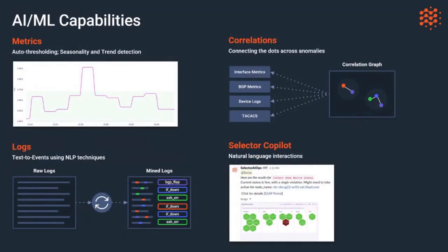To recap on AI and ML in the platform today: we have auto baselining and auto thresholding for metrics. For logs, we do text-to-event extraction and named entity recognition to extract metadata. For correlations, we group everything together. And then we have this conversational LLM that allows you to come in and ask questions of the telemetry directly.